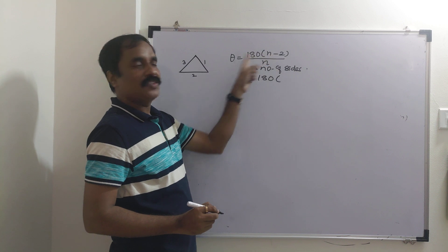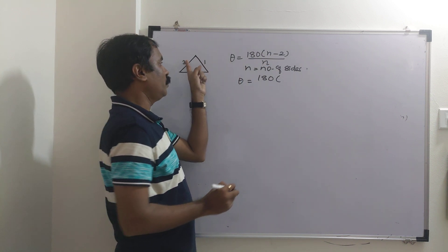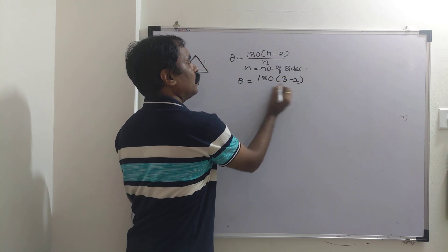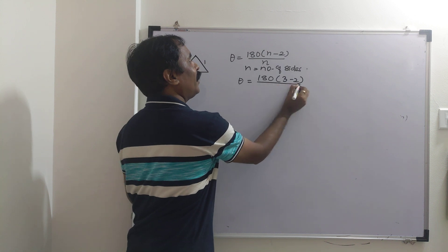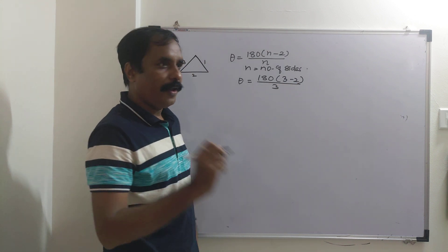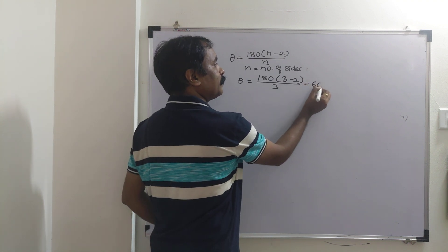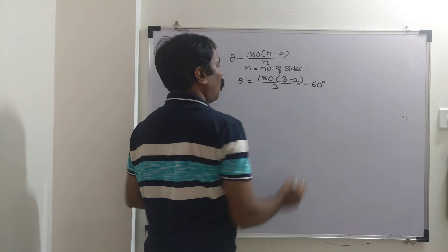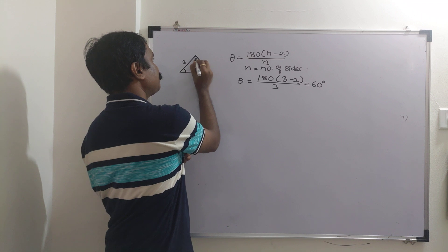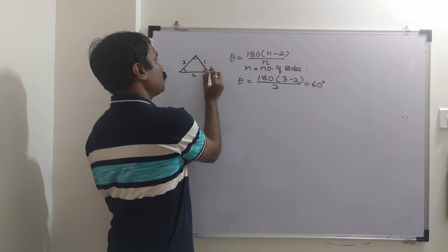For cyclopropane, n equals 3. So theta equals 180 times (3 minus 2) divided by 3, giving a bond angle of 60 degrees.